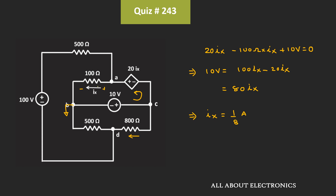That means this current flowing through the 100 Ohm resistor is equal to 1/8 A. That means the voltage across this 100 Ohm resistor is equal to 100 Ohm × 1/8 A, which is equal to 12.5V. And if you see over here, this voltage is nothing but the voltage Va, because we have considered node B as the reference node. That means the voltage across this 100 Ohm resistor is equal to Va.